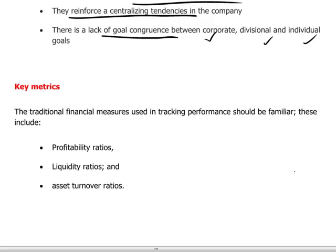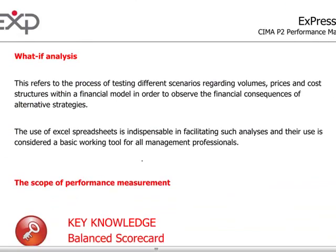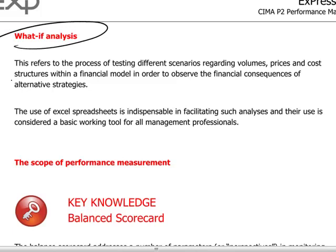There are key metrics connected to budgeting and performance measurement — the traditional ones being profitability, liquidity, and asset turnover ratios, which are covered in other CIMA papers. Finally, there is also the process of what-if analysis, which is a testing of different scenarios looking into the future — describing optimistic or pessimistic possible outcomes for how the business is likely to evolve. The use of spreadsheets for this is quite universal, and it's surprising how extensively they are used even in very large corporations for very important processes.